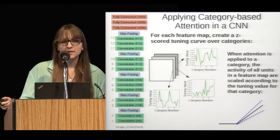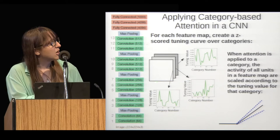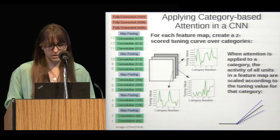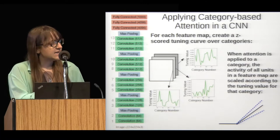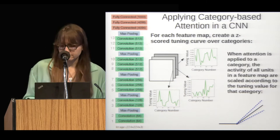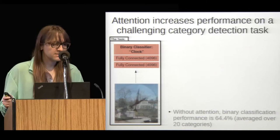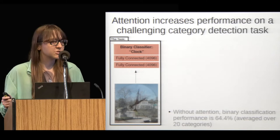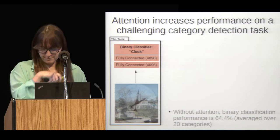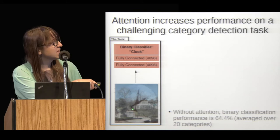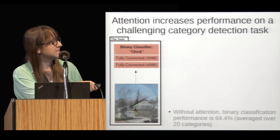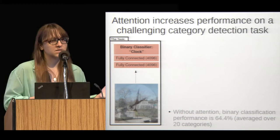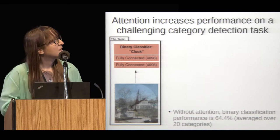All of the units in a given feature map are modulated in the same way because, as I said, feature attention is spatially global. This modulation to the feature map activity can be done at any of the layers in the network, and in the network I'm using there are 13 total convolutional layers. To study attention, you have to present the subject with a challenging visual task, so we present the network a more challenging task involving two overlaid images as input. The task is to determine if a given object category is present in these merged images, and the final layer — which normally does 1,000-way object classification — is replaced by binary classifiers for each individual category. Without attention, this network performs at around 64% accuracy on this task.